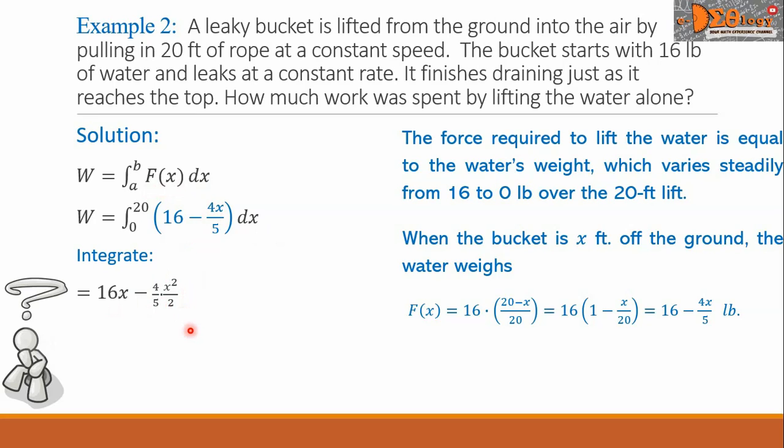Integral of 16 is 16x minus integral of 4X over 5 is 4 over 5 times X squared over 2. We simplify further and we write 16x minus 2X squared over 5 to be evaluated from 0 to 20. So the next step now is 16 times 20 minus 2 times 20 squared over 5 minus the second group. 16 times 0 minus 2 times 0 squared over 5.